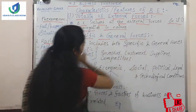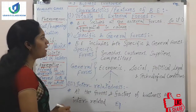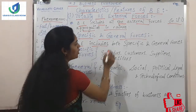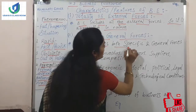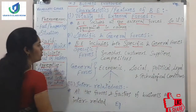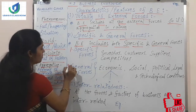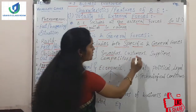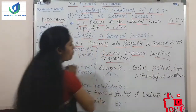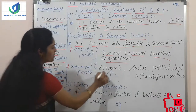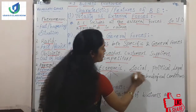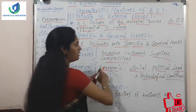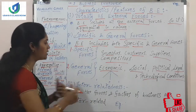The second feature is specific and general forces. Business environment includes both specific and general forces. Specific forces include investors, customers, suppliers, and competitors. General forces include economic, social, political, legal, and technological conditions — meanings which were explained in the previous class.